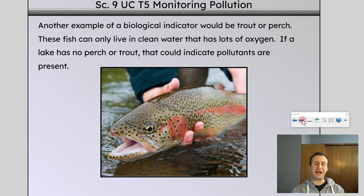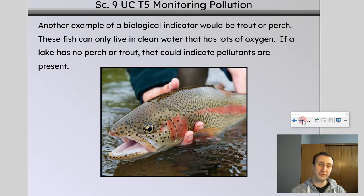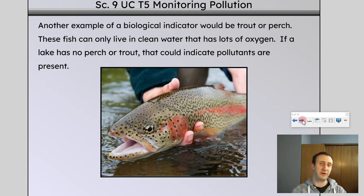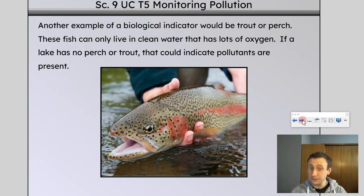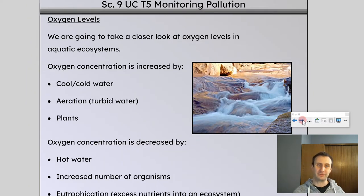When you see trout or perch present, you know this is actually a pretty healthy ecosystem, because otherwise they would not be able to live. By that logic, if we see a lot of trout and perch dying, washed up on the edges of a lake, that's telling you something's going wrong. It's a bioindicator that something is going wrong and we're losing oxygen content in that aquatic ecosystem.